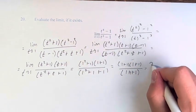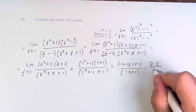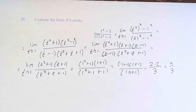1 plus 1 is 2, so this is 2 times 2 over 1 plus 1 plus 1 is 3, so this is 4 thirds.